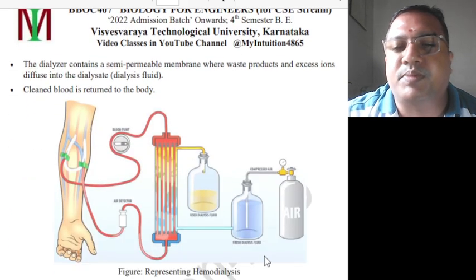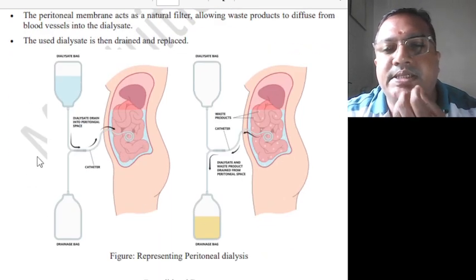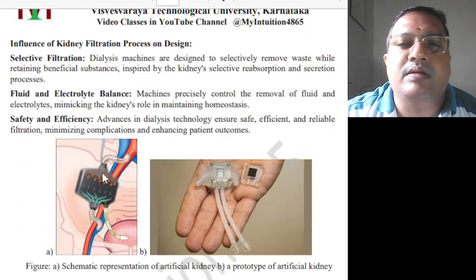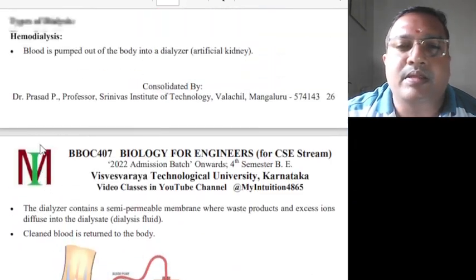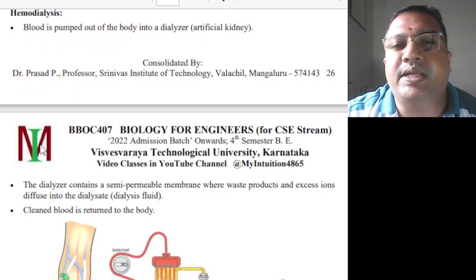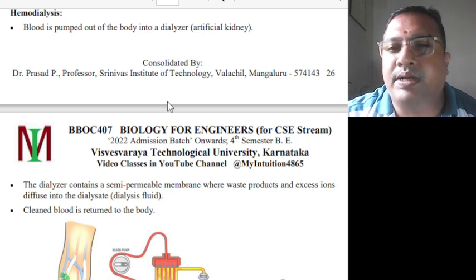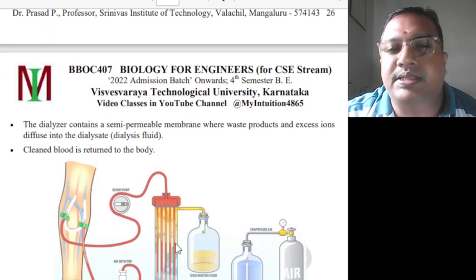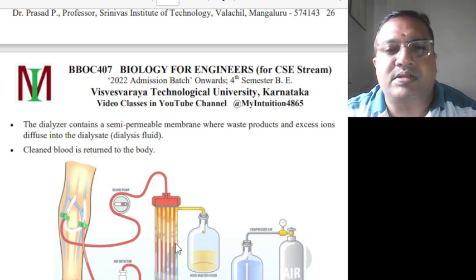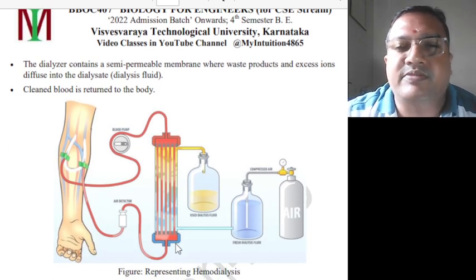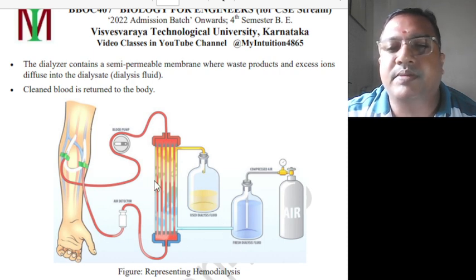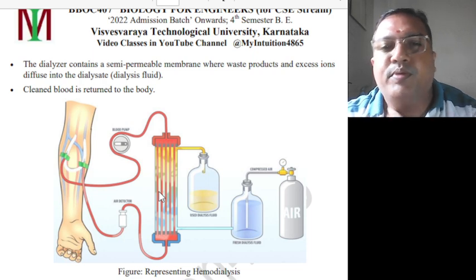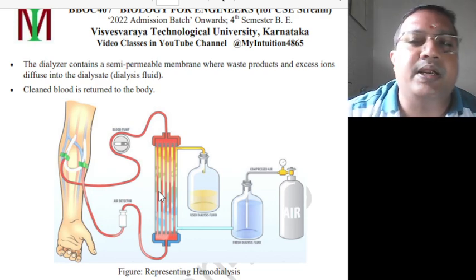Hemodialysis: blood is pumped out of the body into a dialyser, which can be treated as an artificial kidney. The dialyser contains a semi-permeable membrane through which waste products and excess ions diffuse into the dialysis fluid. Clean blood is then returned to the body. With pressure, the fluid retains impurities drawn from the blood, which are purified, and the blood is pumped back.